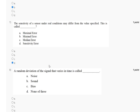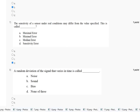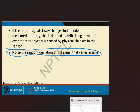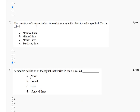Question eight: a random deviation of the signal that varies in time is called what? Options are: first, noise; second, sound; third, voice; fourth, none of the above. Noise is a random deviation of the signal that varies in time. The correct answer to question eight is option A, noise.